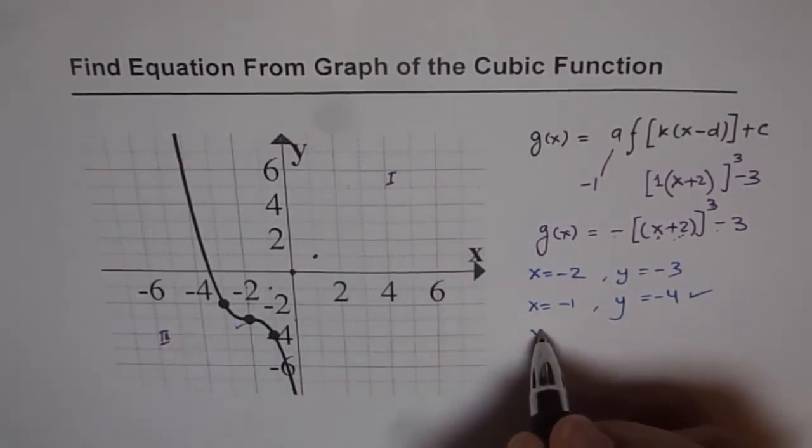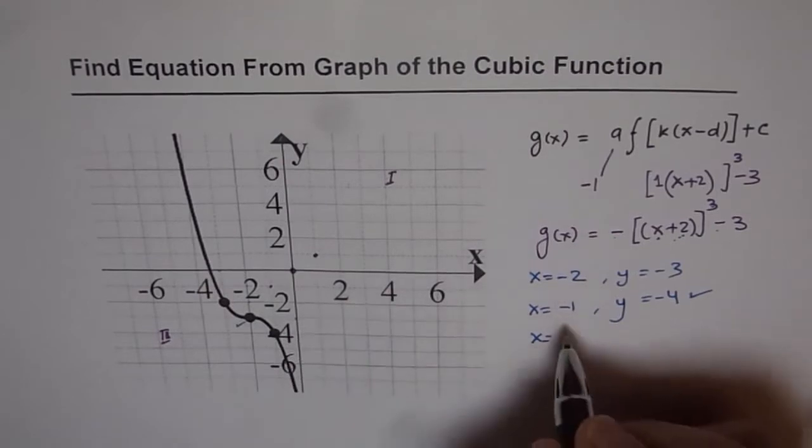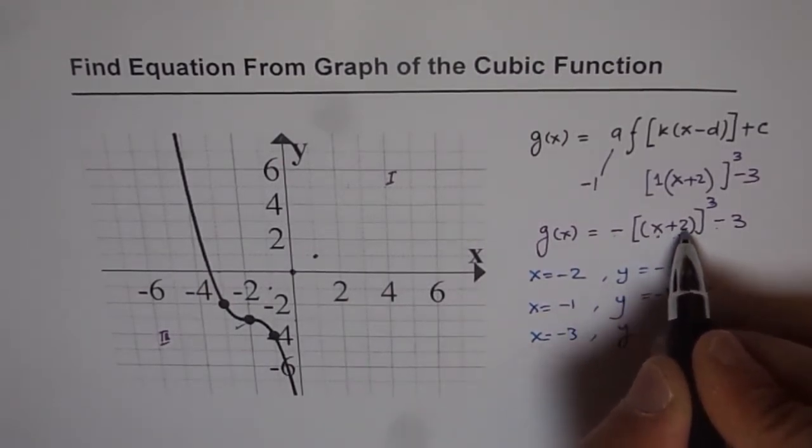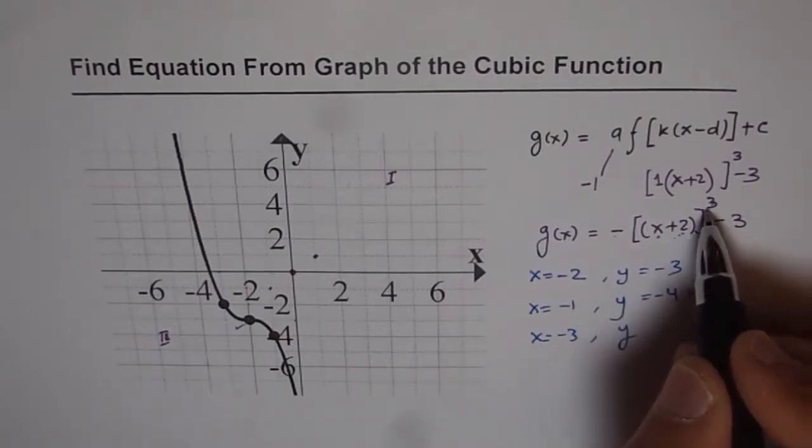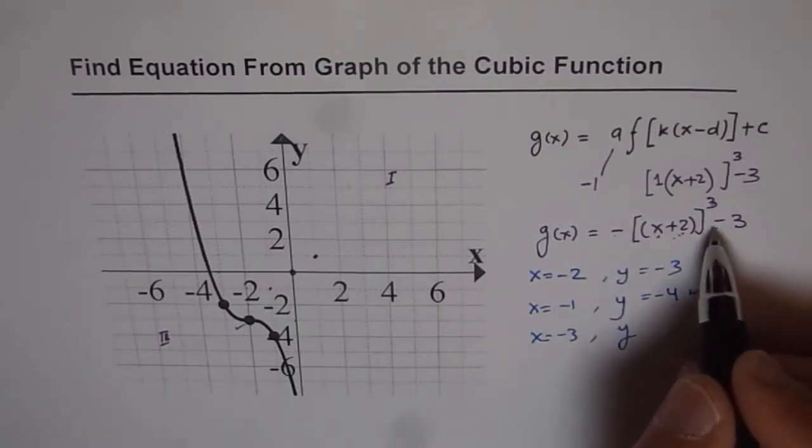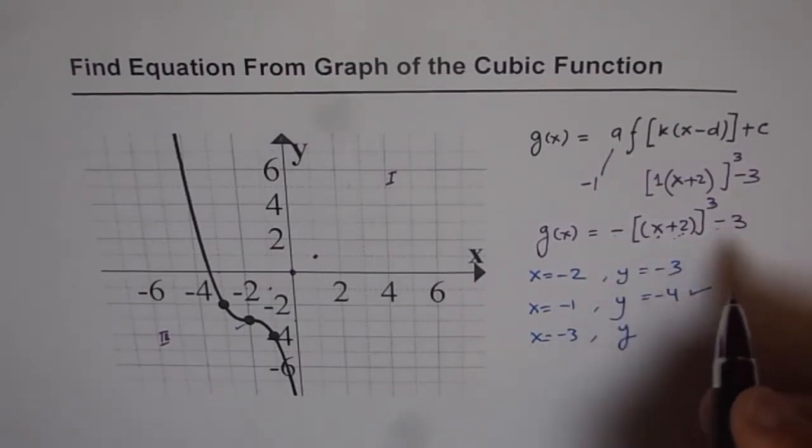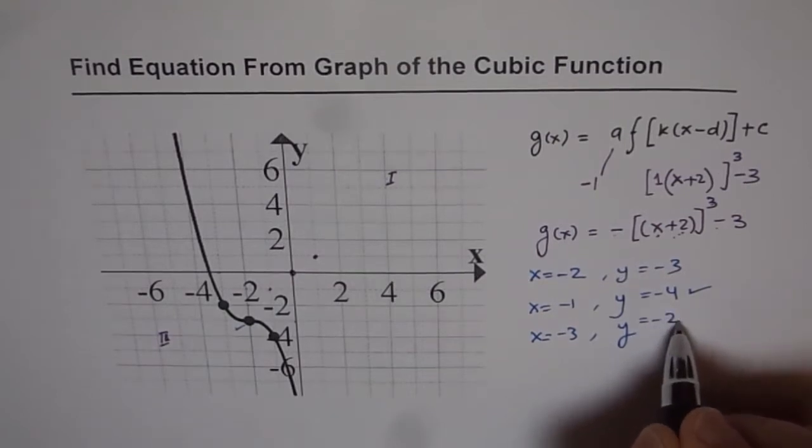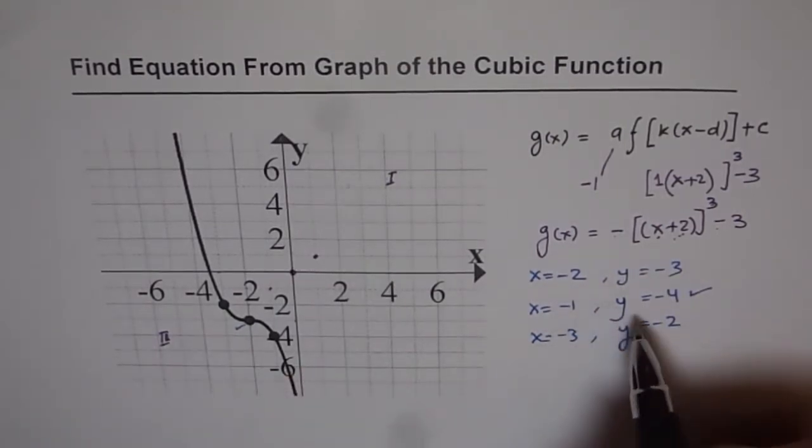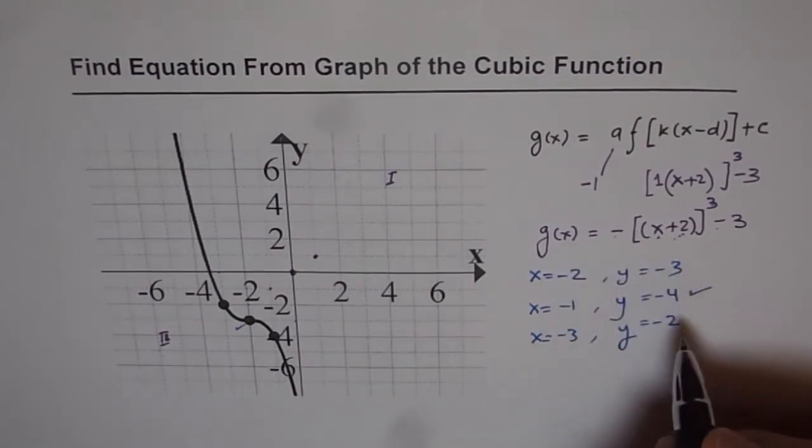Similarly, you can test for x equals minus 3 and find y. Minus 3 plus 2 will be minus 1 and minus 1 cubed will be minus 1 and minus of minus will be plus. Minus 3 plus 1 will be minus 2. So y equals minus 2. So by this, we can check all the 3 points and now we are sure that our equation is perfectly fine.